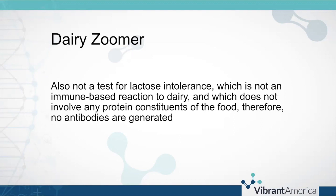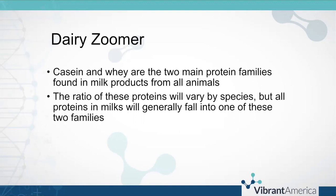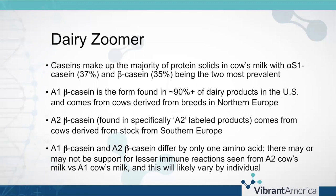Casein and whey are the two main protein families found in milk products from all animals. The ratio varies by species but all proteins in milks will generally fall into one of these two families. Caseins typically make up the majority of protein solids in most milks, including cow's milk, with alpha casein and beta casein being the two most prevalent. A1 beta casein is found in about 90% or more of U.S. dairy products, from cows derived from northern European breeds. A2 beta casein — specifically labeled on health food products — comes from southern European stock, is found in goat's milk, and is also the form found in human milk.